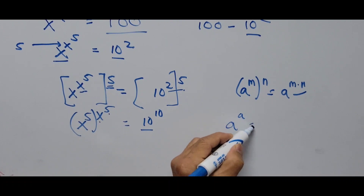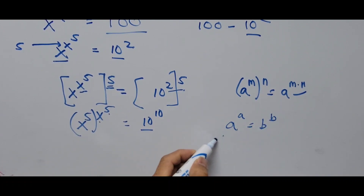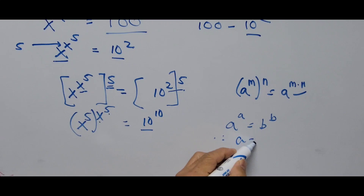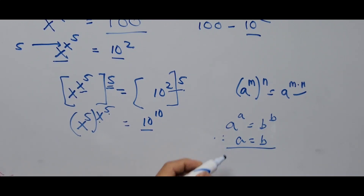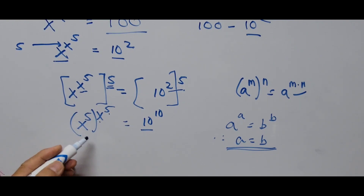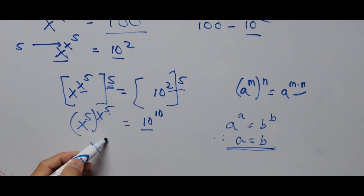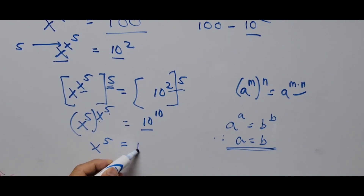On the right side, the base is 10 and the exponent is 10. Using the principle: if a raised to a equals b raised to b, then a equals b — this principle applies here. Therefore, x to the 5 equals 10, meaning x to the 5 equals 10.